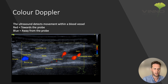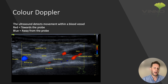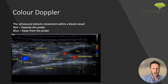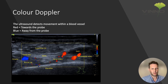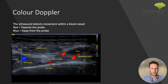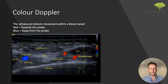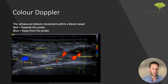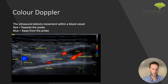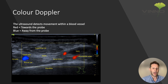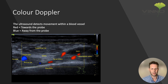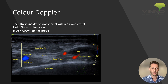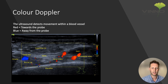A better way to differentiate artery from vein is to look at the pulsatility of the vessel. You can see here that the labiomental and the facial artery are pulsing away, whereas the facial vein is not. If you put a bit of pressure on with your probe you can collapse the veins far more easily than you can collapse the arteries.